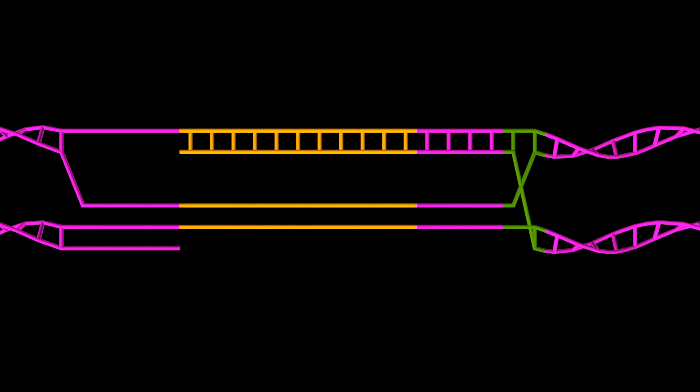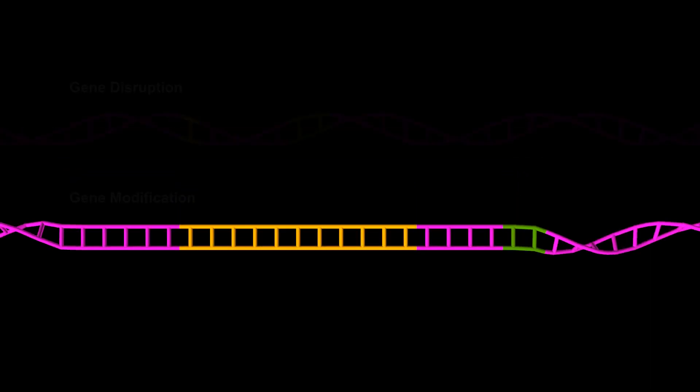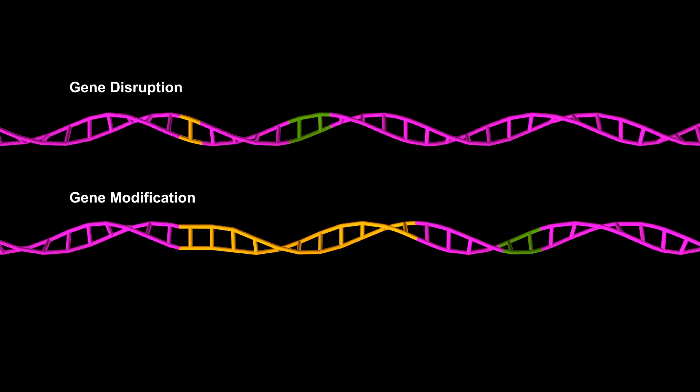This is how the CRISPR-Cas9 genetic editing system allows scientists to precisely disrupt or modify genes.